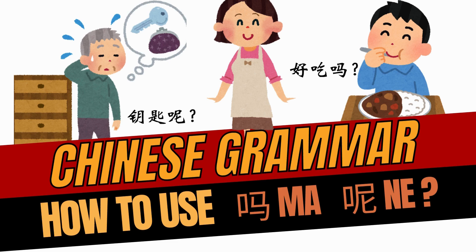大家好! Welcome to Learn Mandarin Chinese in 5 Minutes YouTube Channel. In today's video, we are going to learn how to differentiate the Chinese particles 吗 and 呢. Chinese learners, especially beginners, often get confused between these two particles because both are used to form questions. Without further ado, let's get started.